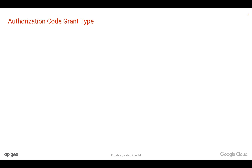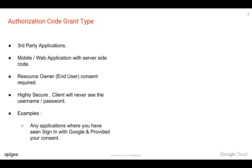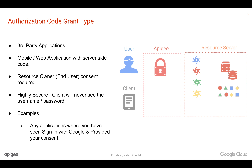The next grant type is authorization code grant type. This is generally used in third-party application scenarios where you are giving access to another third-party application trying to access your APIs. These third-party applications will have server-side code, resource owner consent is required, and the client will never see the username and password. Typical examples are when you click 'Sign in with Google' or 'Sign in with Facebook' buttons — you have used the authorization code grant type.